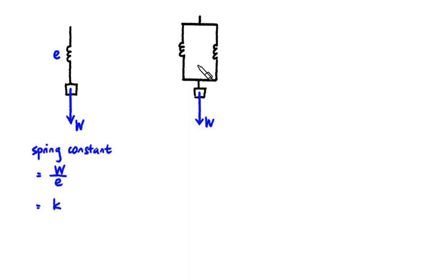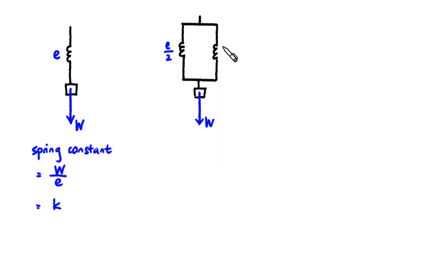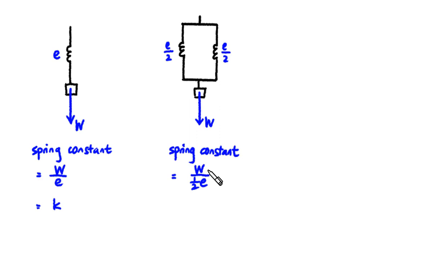Now let me connect two of these identical springs in parallel and let me stretch them using the same weight W. Since there are now two tension forces supporting W, each tension force would only be W divided by 2, which means each spring would only be half as extended as before, so the extension is E over 2. This means I can write the spring constant for this composite spring as W divided by half E, which is 2K.